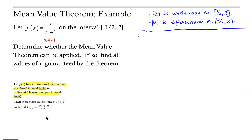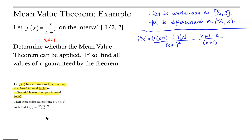Starting with f prime of x: the derivative of the numerator is 1 times the denominator, minus the derivative of the denominator — which is also 1 — times the numerator, all divided by the denominator squared, or x plus 1 squared. This gives us x plus 1 minus x over x plus 1 quantity squared, and when we simplify that we end up with 1 over x plus 1 squared.